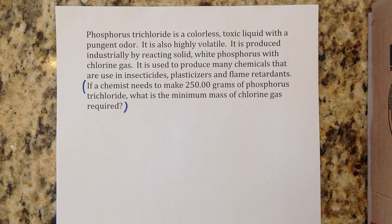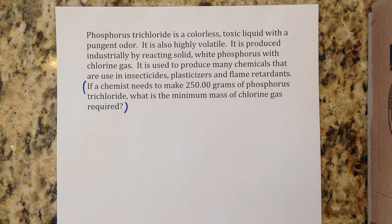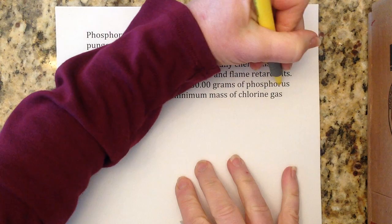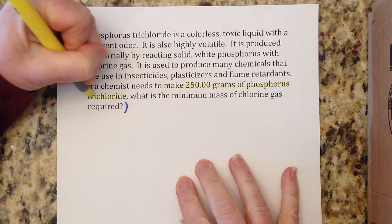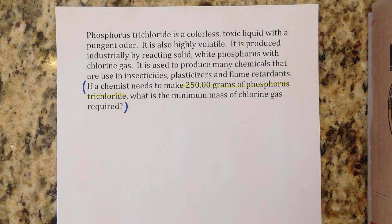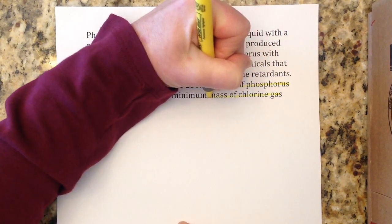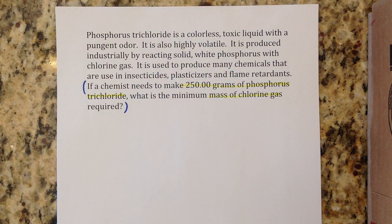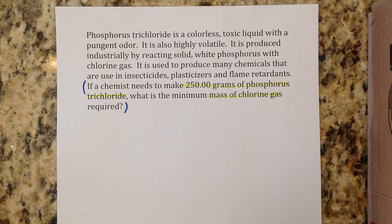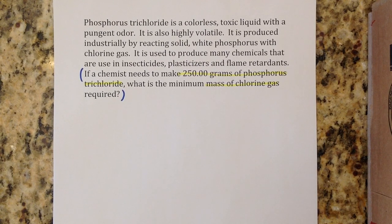What I tell students is you're looking for two things: what they gave you — that's called the given — and what they want. They gave me 250 grams of phosphorus trichloride, and they want the mass of chlorine gas. So they gave me phosphorus trichloride and they want chlorine gas. Before I can do anything, I'm going to have to have a balanced equation, so let's look at our clues and see what we're working with.